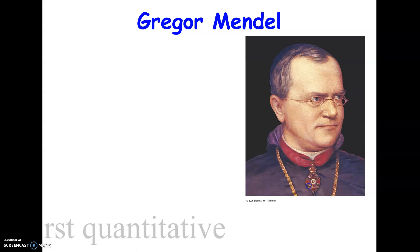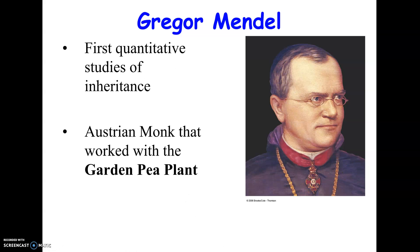Our father of genetics is Gregor Mendel. He was an Austrian monk, and he studied pea plants. He's the first one to do quantitative or numerical studies — he actually crossed his plants and kept records of exactly how many came out tall and how many came out short. This led him to his principles of inheritance, which we still follow today. He wasn't really accepted for his work in his time because they didn't know about DNA and chromosomes, but today we realize that everything he said was correct.